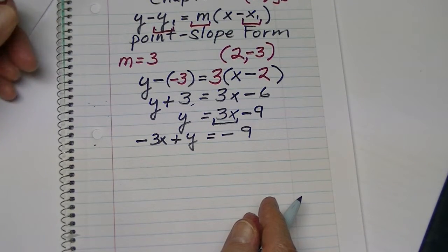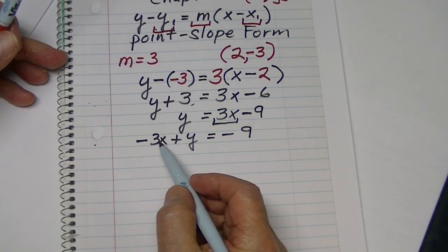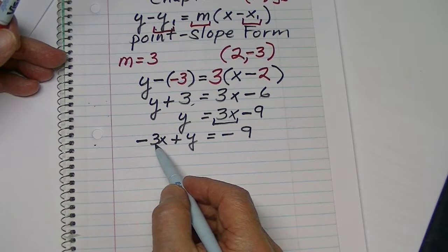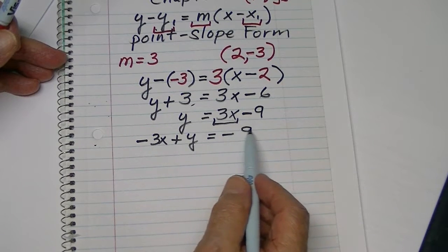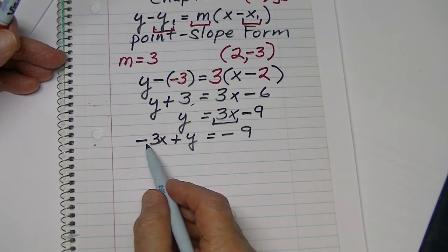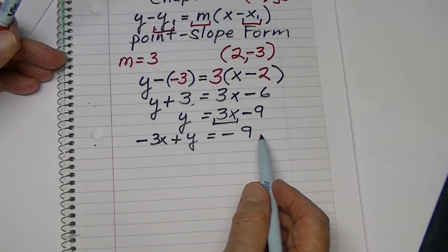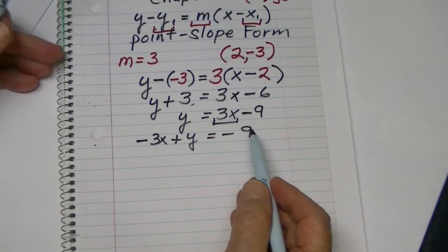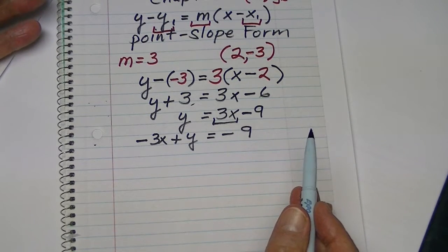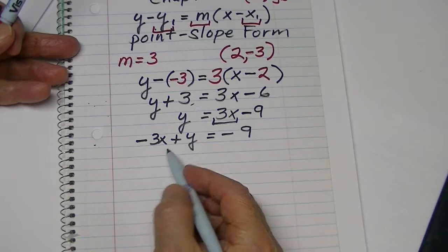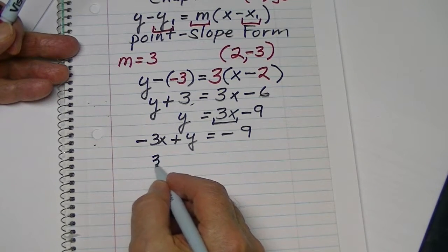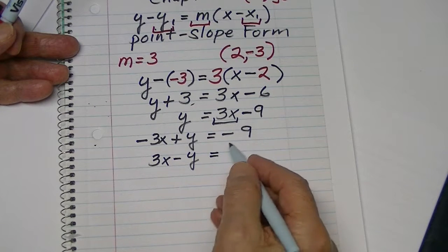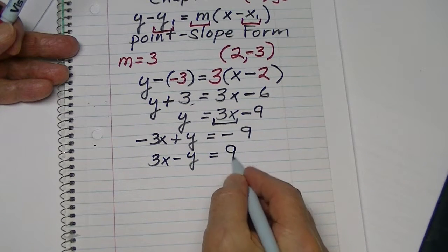Now, in some courses, they would rather not have this first term be a negative. So, what technique might we do to reverse all the signs? Well, we could multiply every term by a negative 1, still keeping our equation equivalent, but that changes the signs. So, this would be 3X minus Y equals a positive 9.